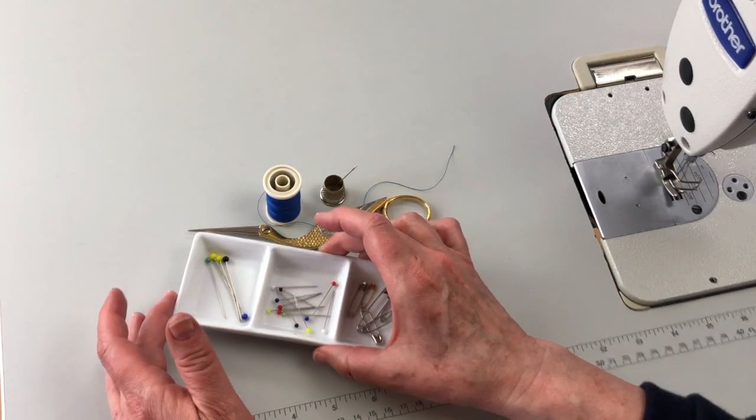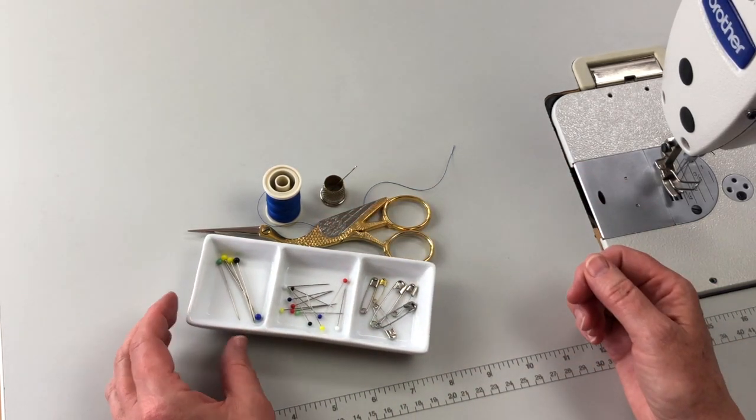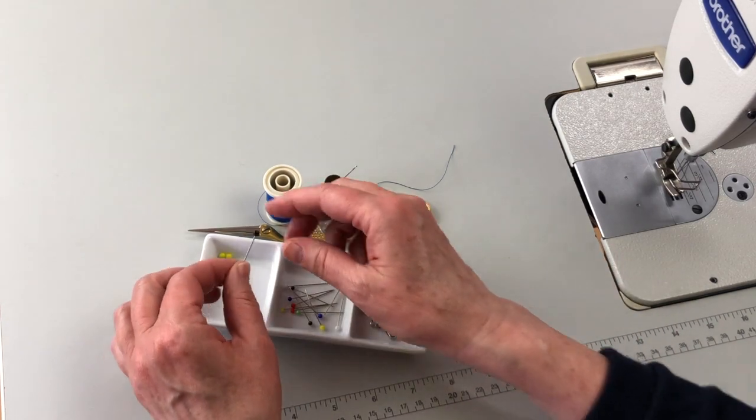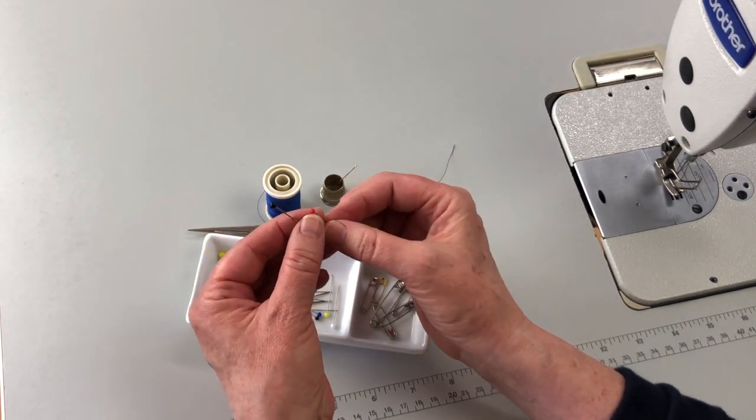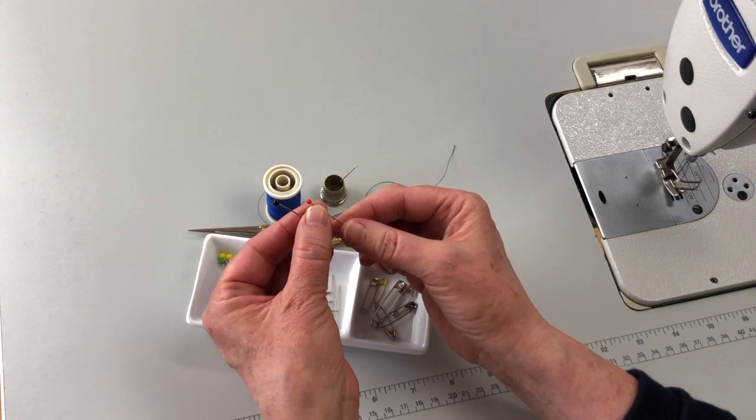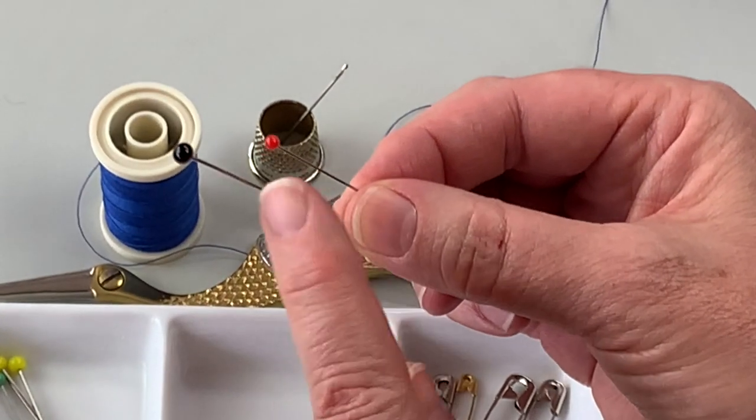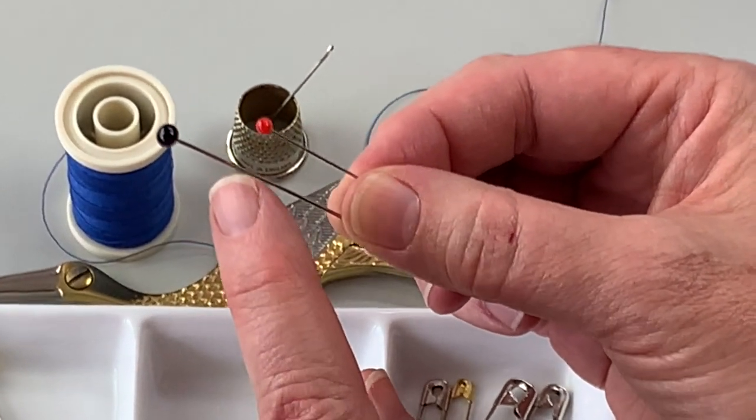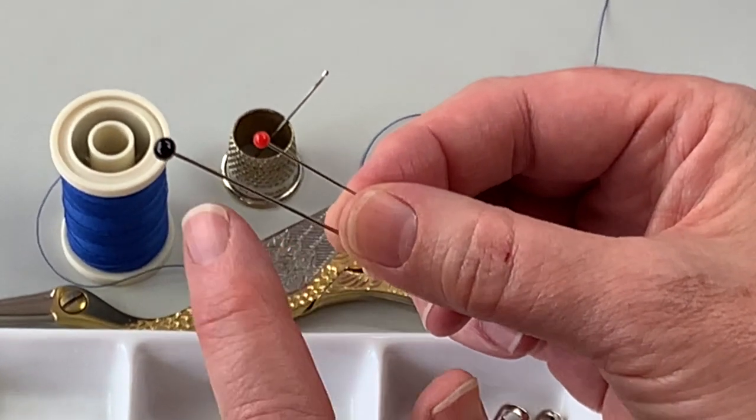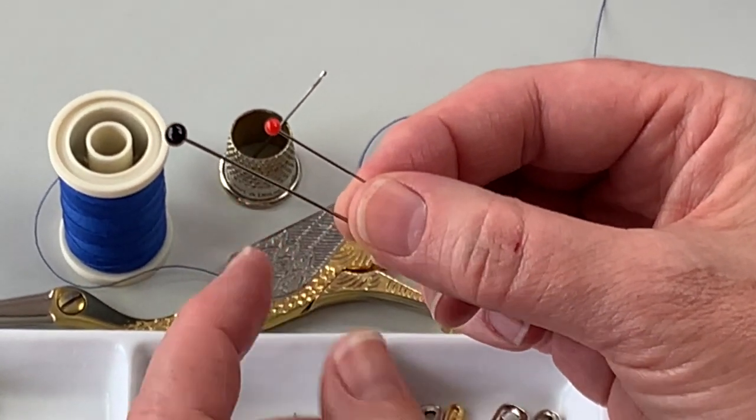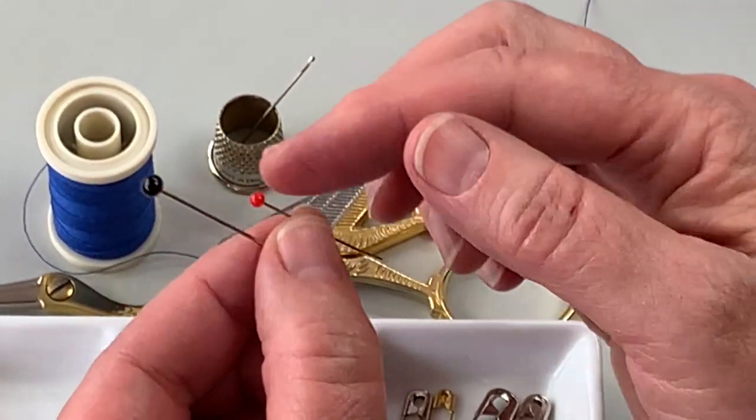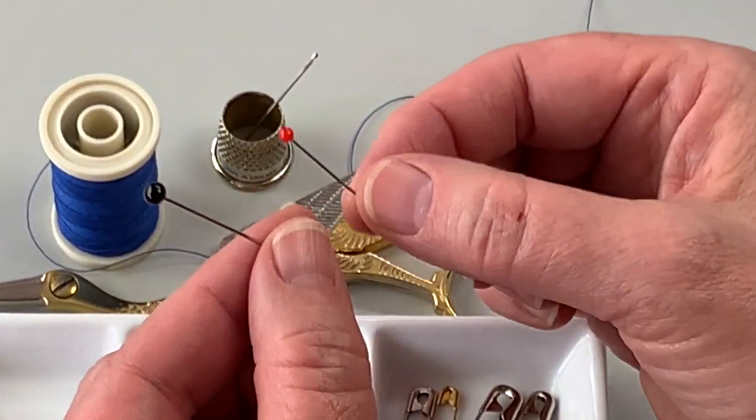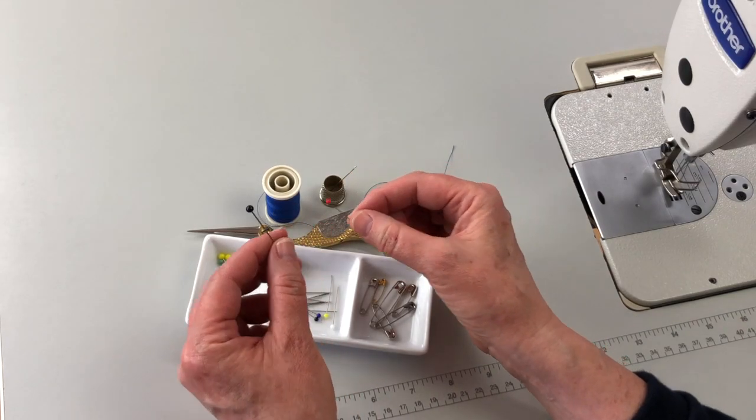You're going to need some pins. I like to use stainless steel, glass-head, or color-headed pins. They're easy to see and they're easy to handle. I use them in two lengths. You have a longer length for upholstery fabrics, denims, heavier weaves, and then the smaller length, which is really pretty good for all the light and medium-weight fabrics.